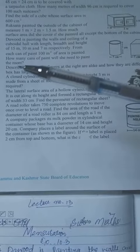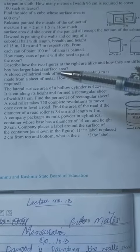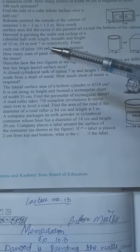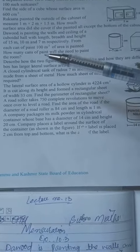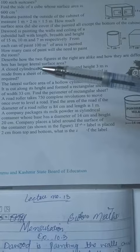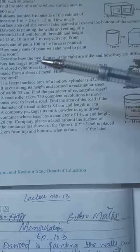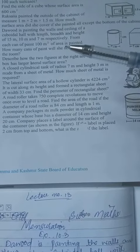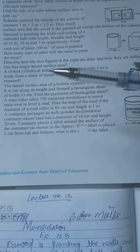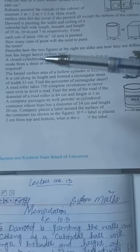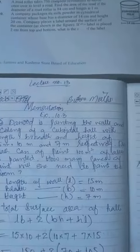So Daud is painting a cuboidal hall with dimensions: length 15 meters, breadth 10 meters and height 7 meters. If one can paints 100 square meters, how many cans are required?